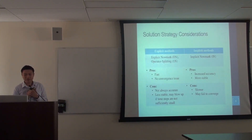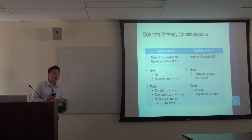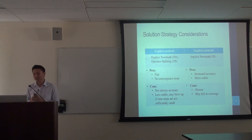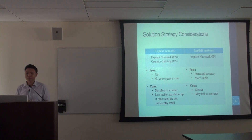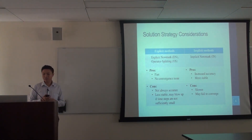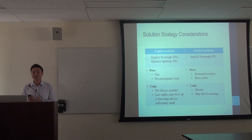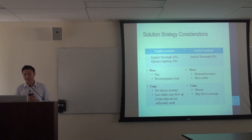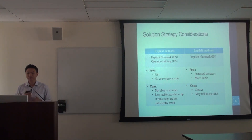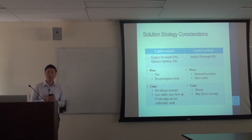We investigate different solution strategies and the goal is to identify optimal ones for simulations of bridges. For explicit methods, like the explicit Newmark method or operator splitting method, these methods are relatively faster and they do not typically face convergence issues because no iterations are required. But they're relatively less accurate and less stable because they might blow up with time steps that are not sufficiently small.